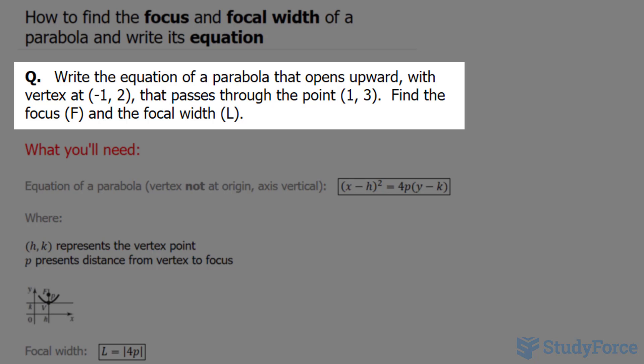The question reads: write the equation of a parabola that opens upward with vertex at (-1, 2) that passes through the point (1, 3). Find the focus and the focal width.